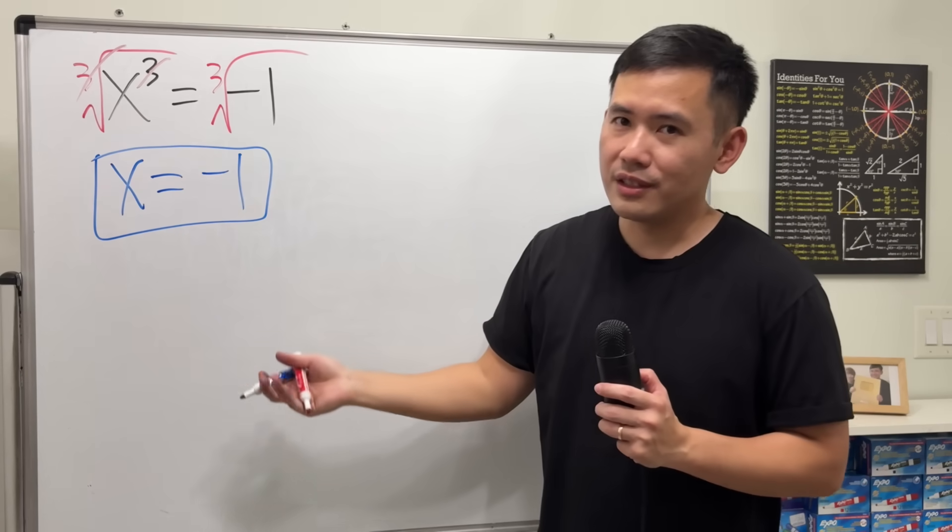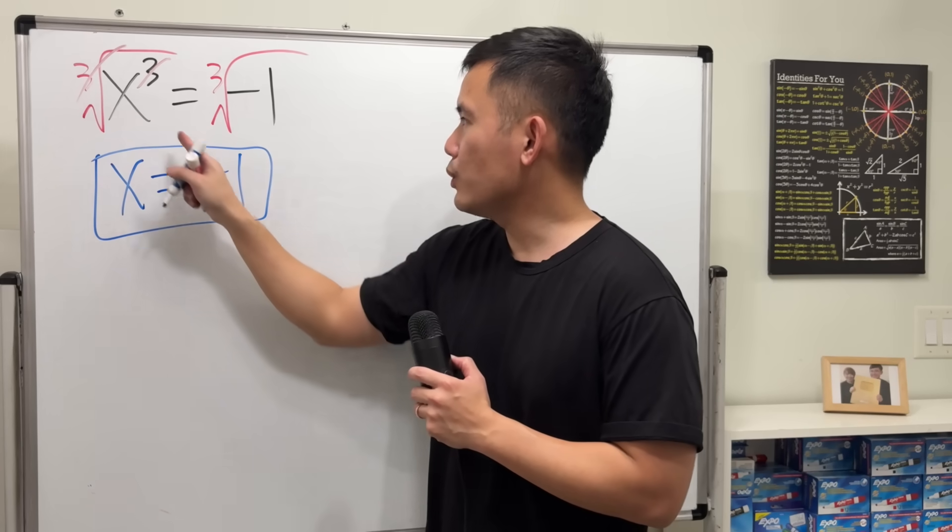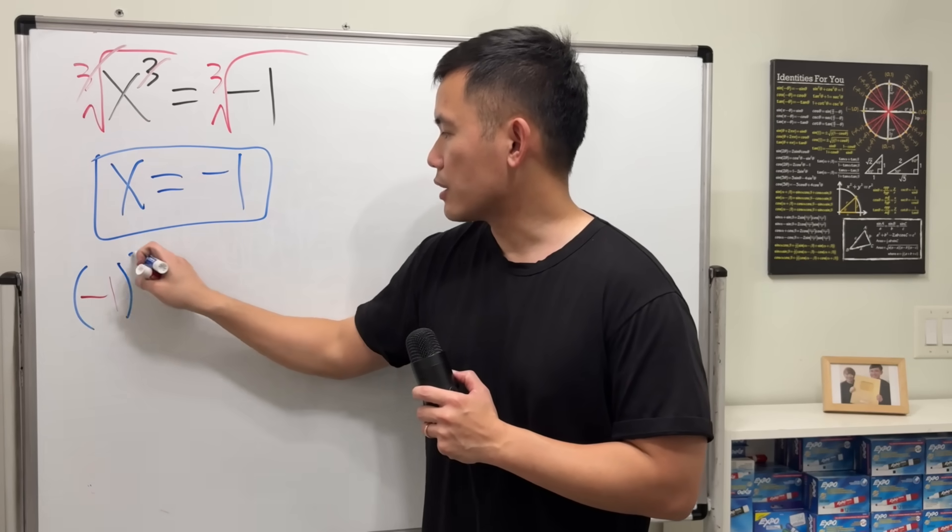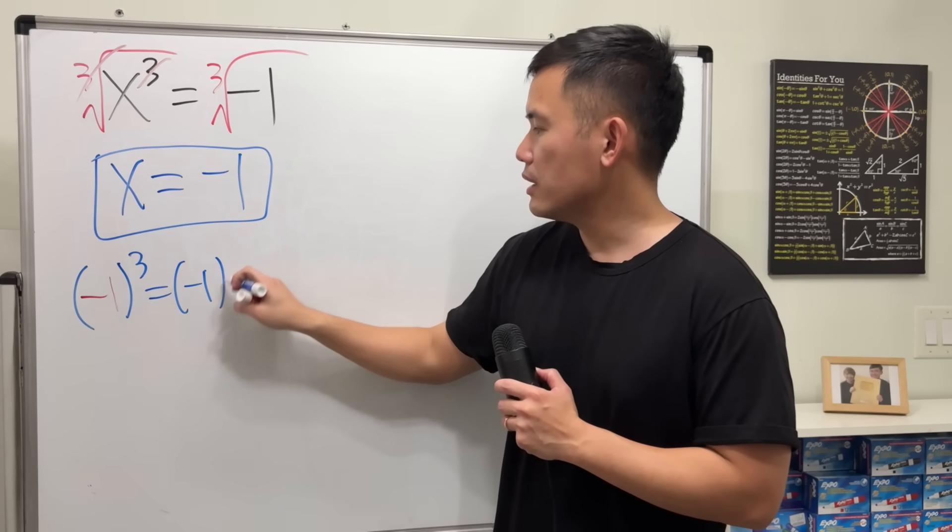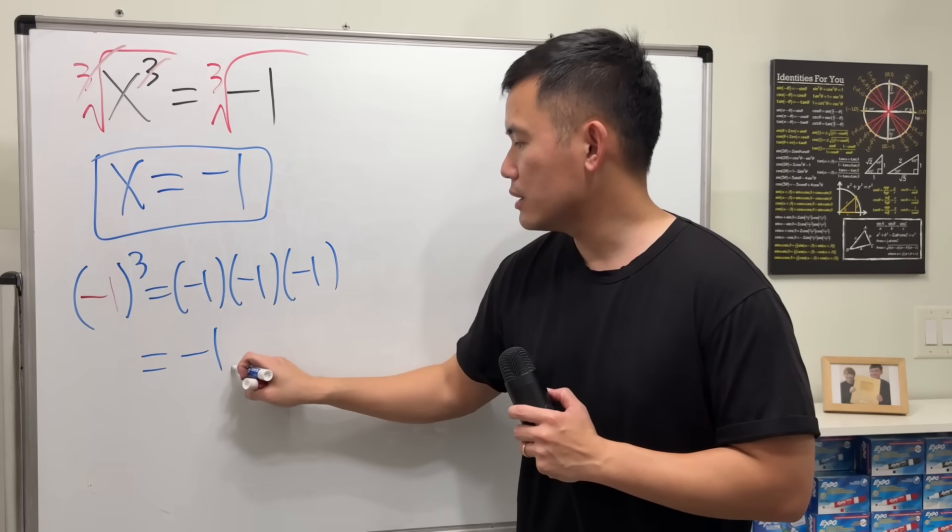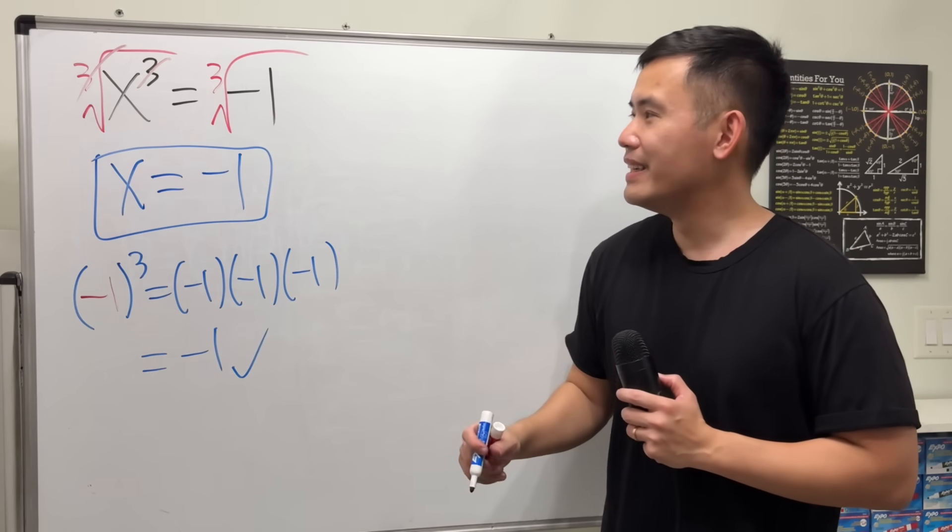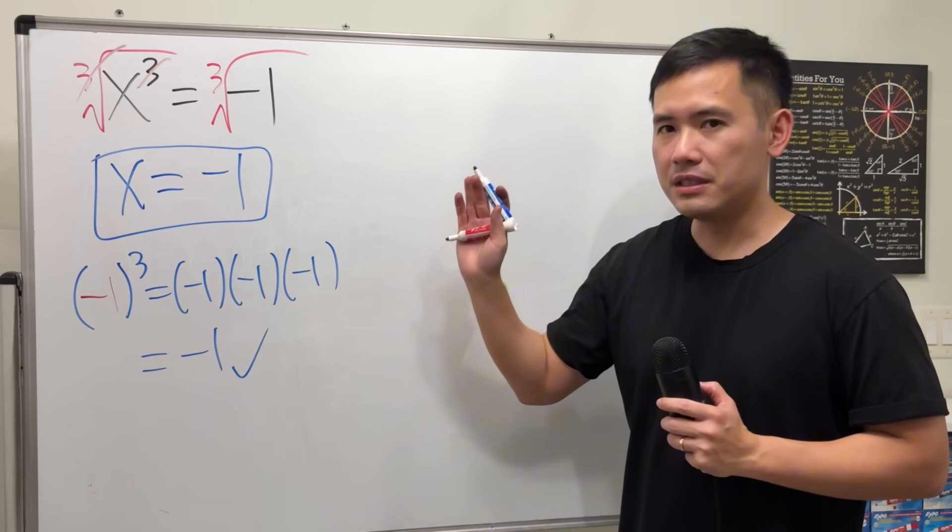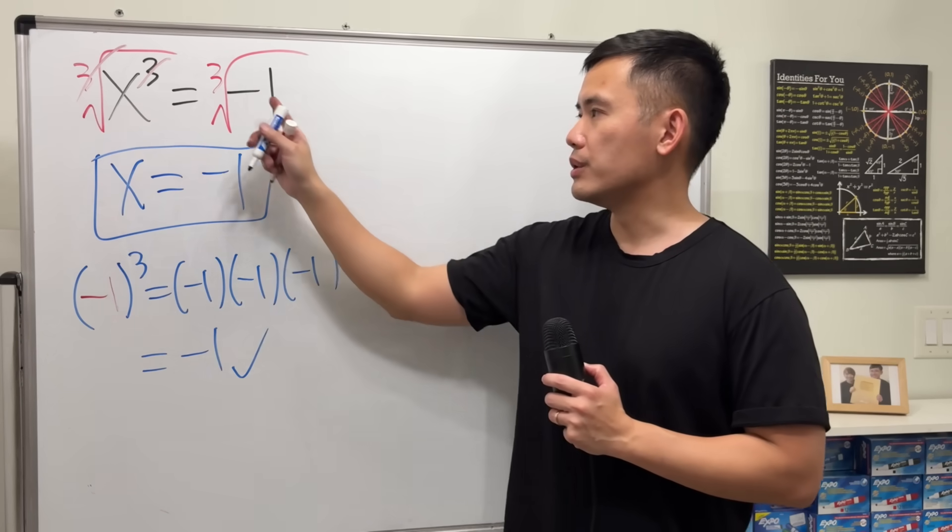If you want them to check the answer, well, they plug in negative 1 into the x. We get negative 1 to the third power, which is negative 1 times negative 1 times negative 1, and we do end up with negative 1, so it checks. However, this is not the only solution to this equation.